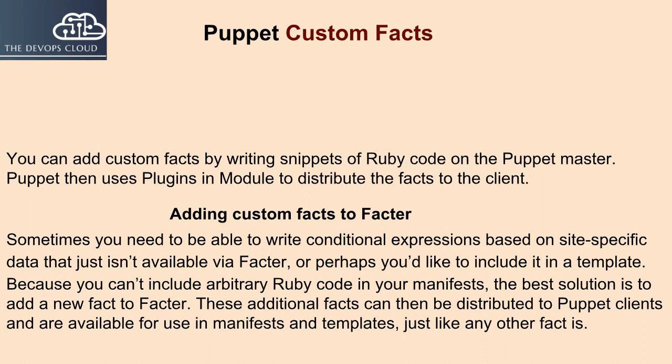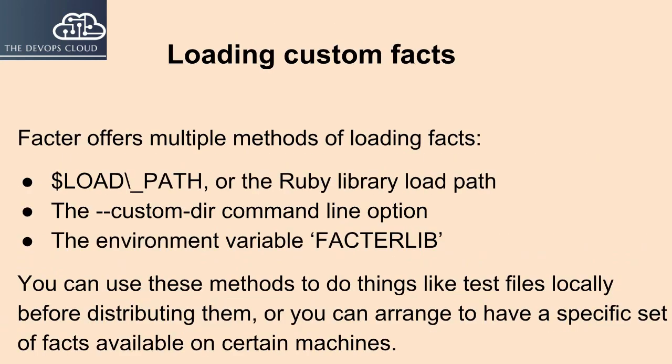These additional facts can then be distributed to Puppet clients and are available for use in manifests and templates, just like any other fact is. Now, how to load the custom facts?